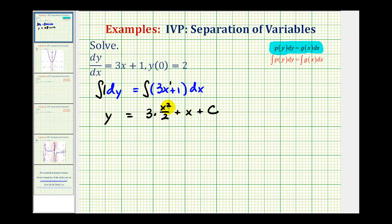So the general solution to this differential equation is y equals three halves x squared plus x plus our constant of integration. But now, because we know y of zero equals two, we can actually find the value of c and therefore find the particular solution to this IVP.